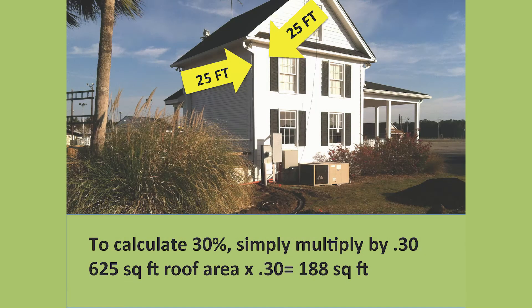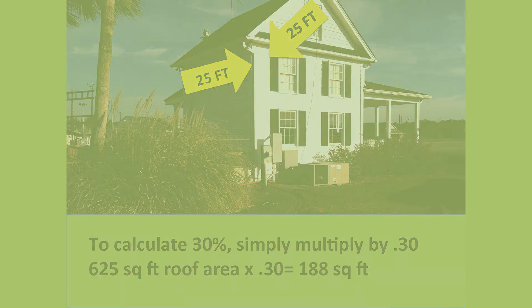With our 625 square foot roof area in loamy soils, our rain garden should be at least 30% as big as the catchment area, which would be 188 square feet or more.